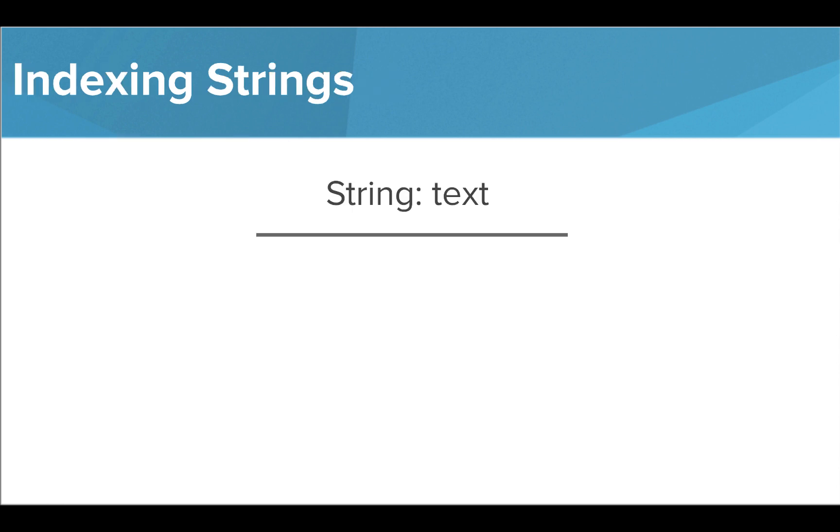A string is just a piece of text. For this example, we're going to set a variable named string equal to the word hello. The index values of our string are assigned to each letter, starting at zero.